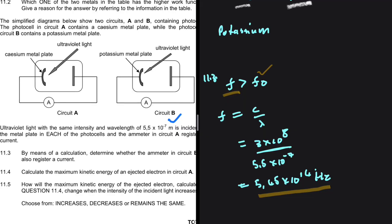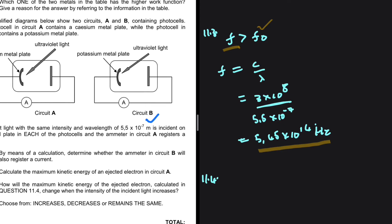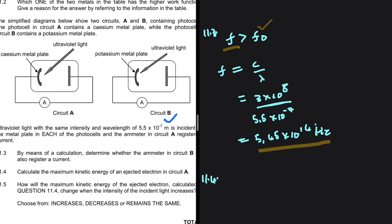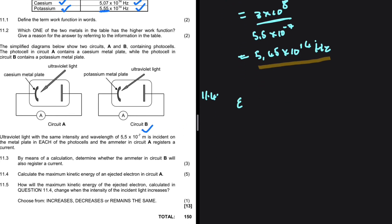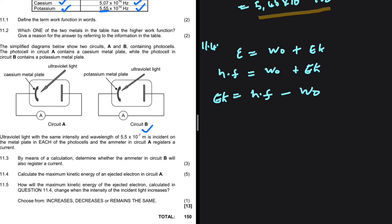For question 11.4, we need to calculate the maximum kinetic energy of an electron in circuit A. We know that energy equals the work function plus kinetic energy, and we can replace energy with Planck's constant multiplied by the frequency of the incident light: hf = W + EK. Rearranging gives EK max = hf − W. Note that on past exam memos, learners have been penalized for writing EK instead of EK max.